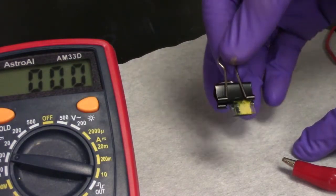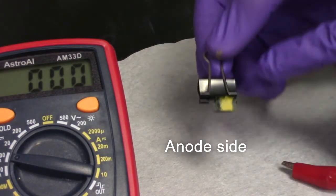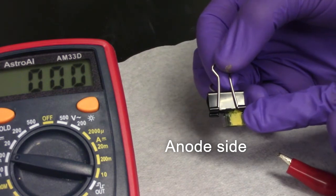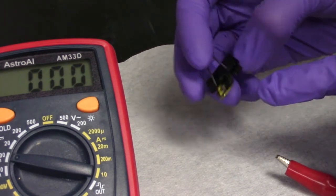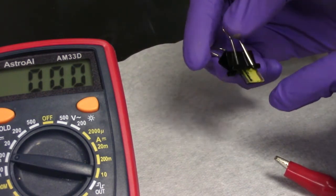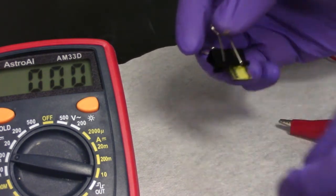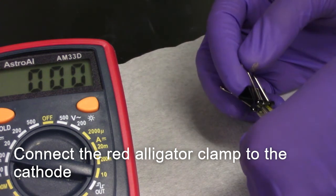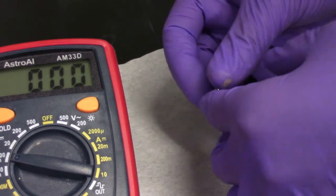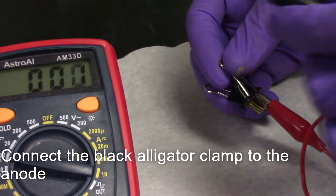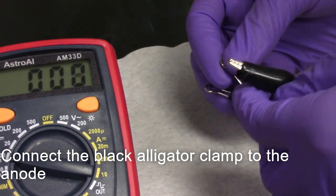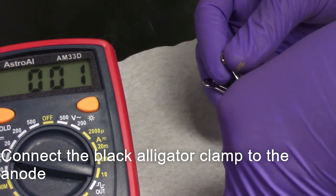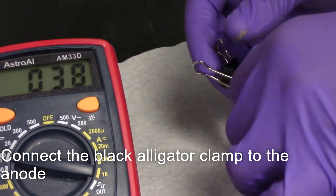We can now begin taking our measurement of our dye-sensitized solar cell. Here we can see the anode side, followed by the cathode side. Begin by placing the red alligator clamp to the cathode side. Connect the black alligator clamp to the edge attached to the anode.